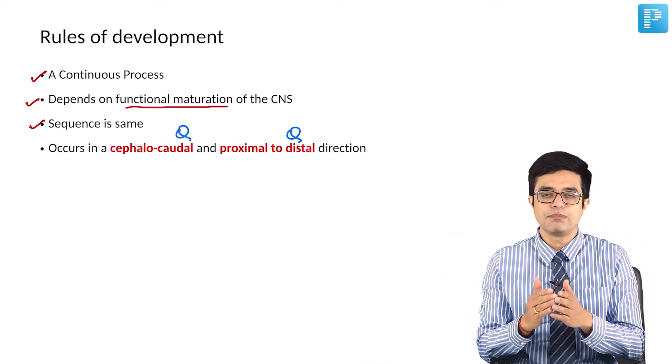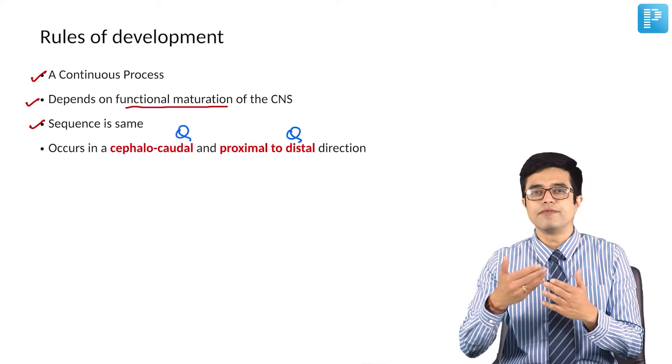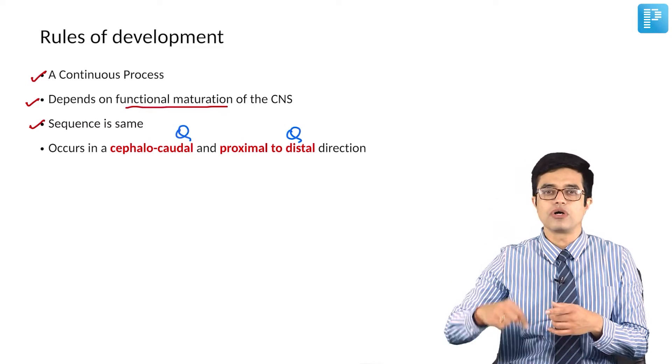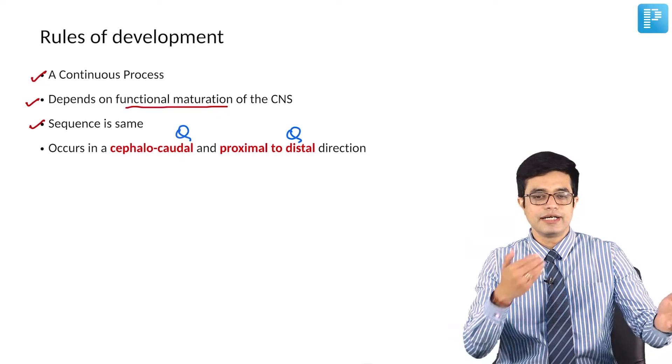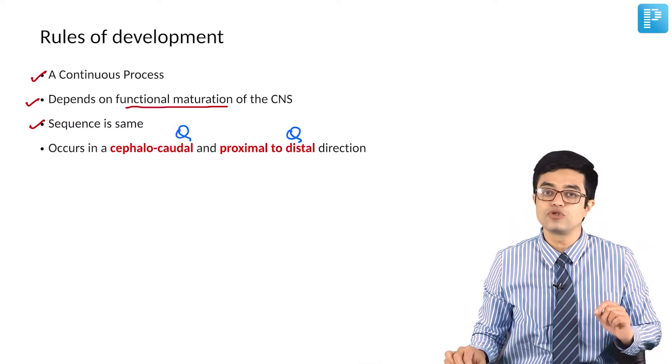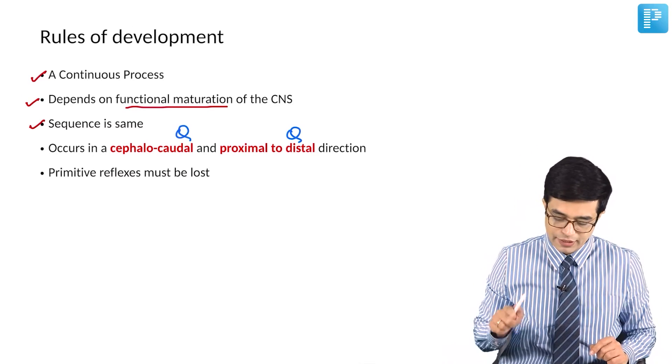So the development question can be asked, what ways it progresses? In the central axis, it is cephalocaudal or craniocaudal. In limbs, it is proximal to distal. So these are the two things can be asked in superspeciality entrance exam.